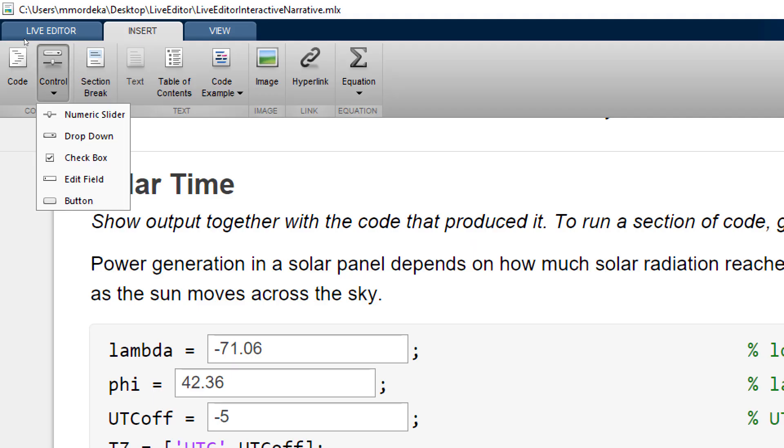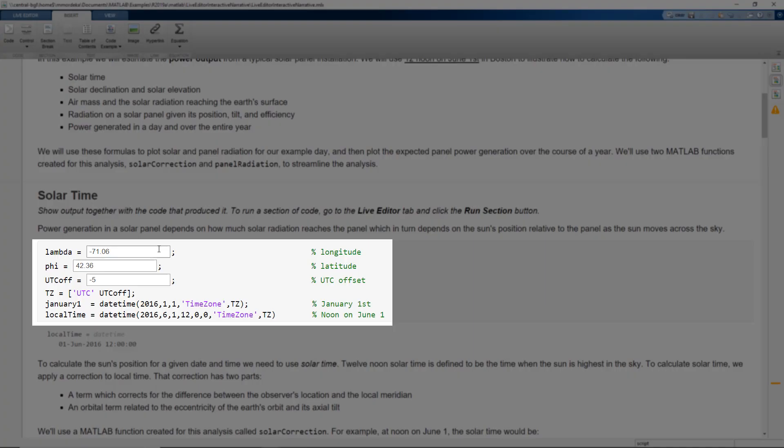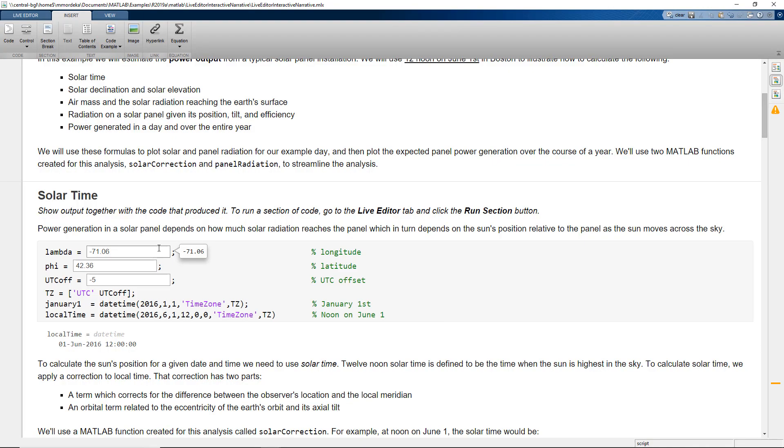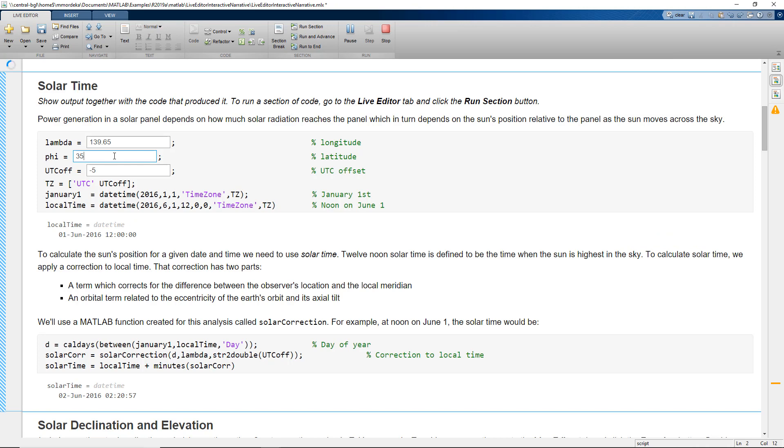We can see here that we can insert different kinds of UI controls like numeric sliders, dropdowns, and checkboxes. Here, we have used an Edit field to enter the location of the place where our solar panel is to be located. The present value is for Waston, let's just change this to Tokyo.